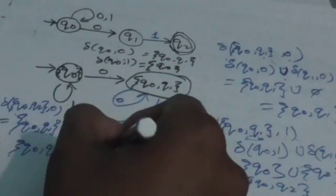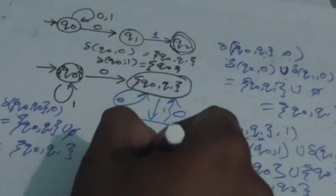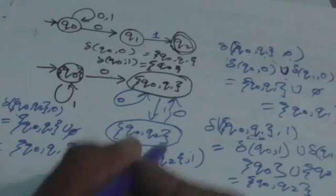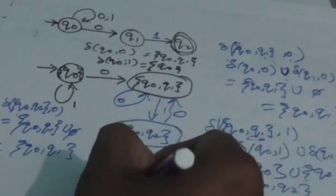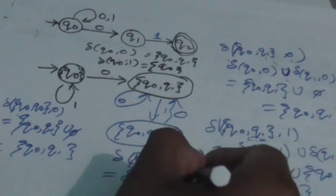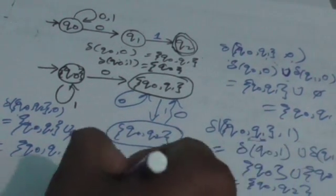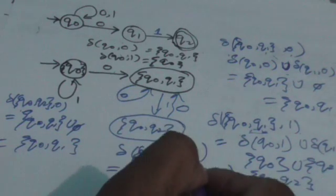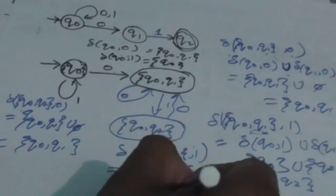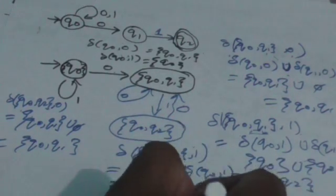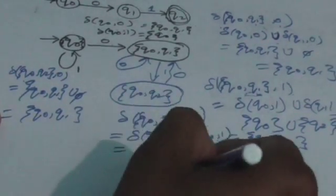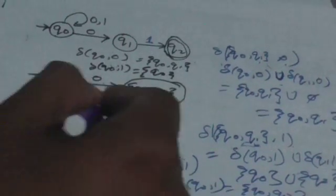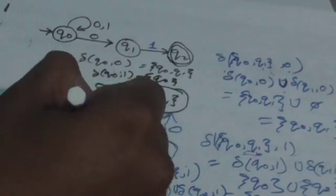For input symbol 1, compute delta({q0, q2}, 1) by applying 1 individually to each state. When you apply 1 to q0 it remains in q0, and when you apply 1 to q2 there is no transition, so the result is just {q0}. So when we apply 1 to {q0, q2}, it jumps to state q0.